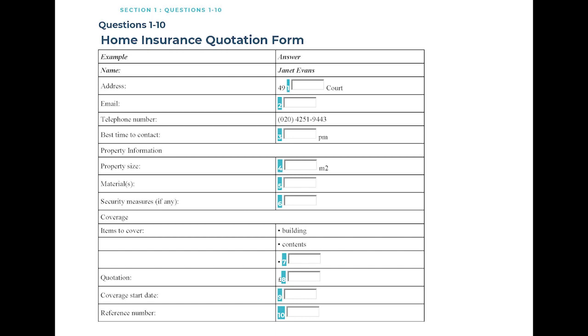And could you give me your primary phone number and the best time to reach you? Sure. The number is 020 4251 9443. I am generally unable to answer my phone at work, but any time after 5.30pm is fine. I will make a note of that here.